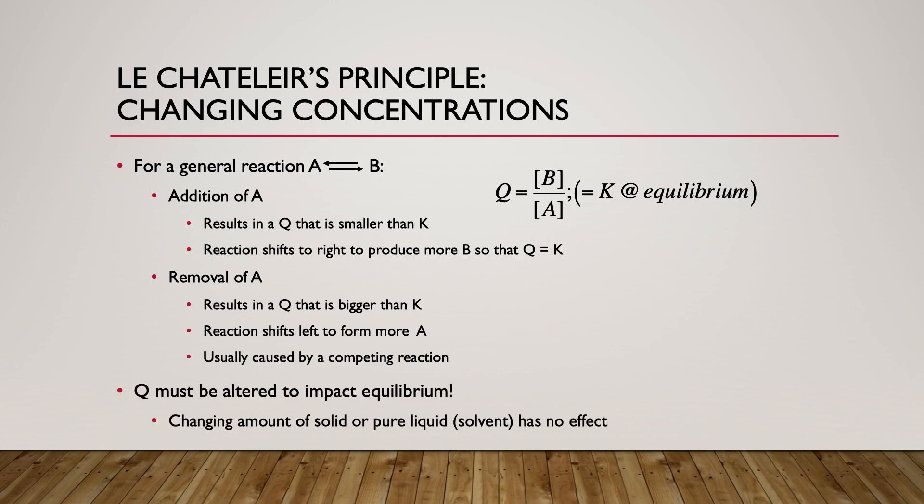Q must change for there to be any equilibrium shift. Changing the amount of a pure solid in a balanced reaction doesn't actually do anything, and the same applies to a pure liquid or solvent — unless you're doing something drastic to the overall volume or concentration of the individual reactants and products.